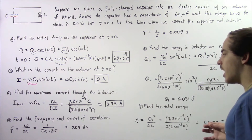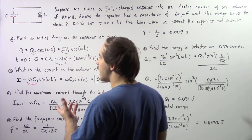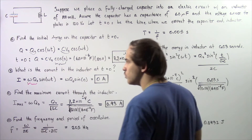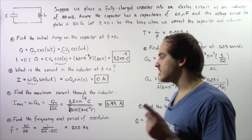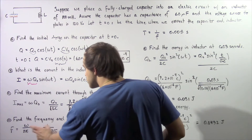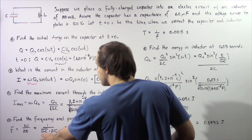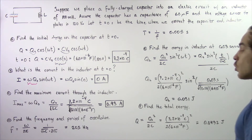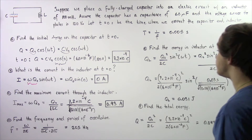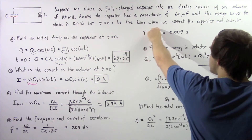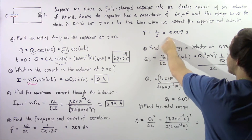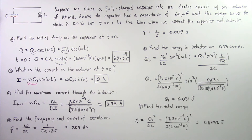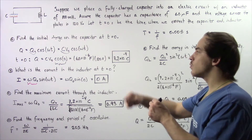Part D asks us to find the frequency and the period of oscillation. Frequency depends on angular velocity omega, so frequency equals omega divided by 2 pi, where omega equals 1 divided by the square root of L times C. Plugging in our values for L and C, we get approximately 205 hertz, or 205 seconds to the negative 1. The period is simply the reciprocal of the frequency: 1 divided by 205, which equals approximately 0.005 seconds — that is how long it takes to complete one full cycle.